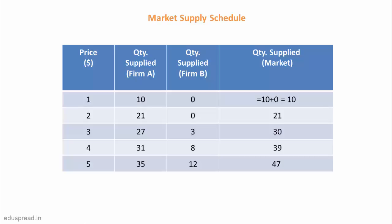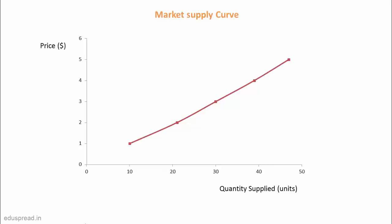Now that we have our market supply schedule, we can simply graph this to get the market supply curve. A market supply curve shows the total amount of quantity supplied at different prices. So this is all about the law of supply, supply schedule, and supply curve.